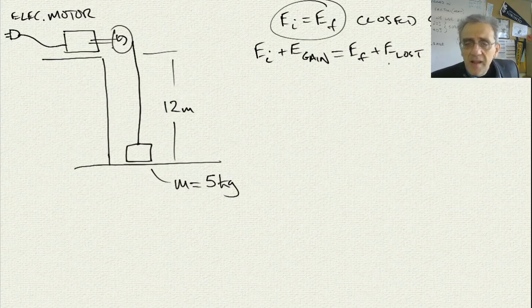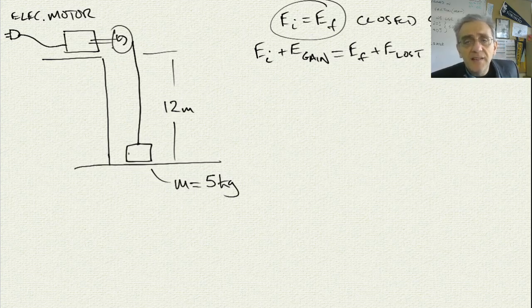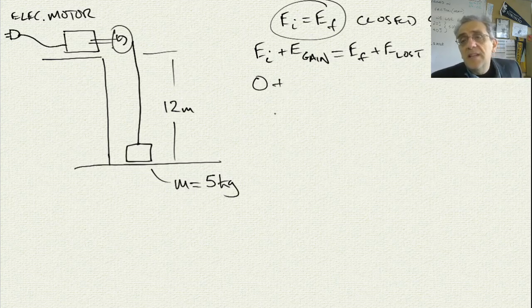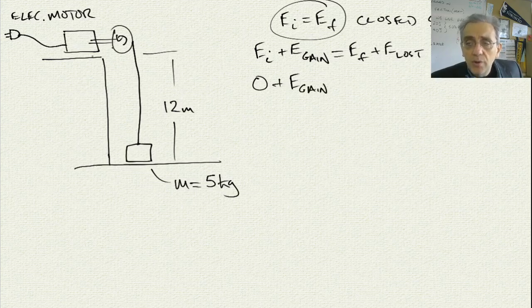I like to use the words gain and lost. So initially, we don't have any kinetic energy — nothing's moving. And initially, we don't have any gravitational potential energy because the mass is at the bottom. So our initial energy is going to be zero. Then we have some kind of gain in the form of electricity that's powering the motor.